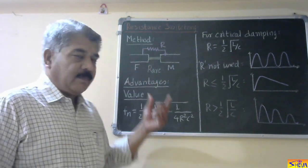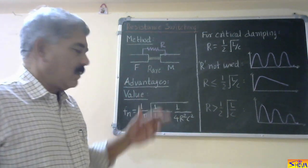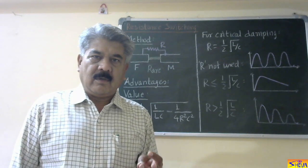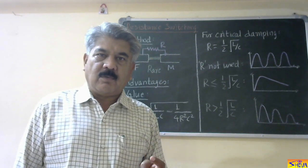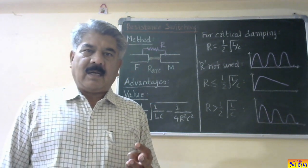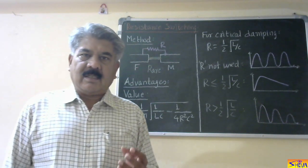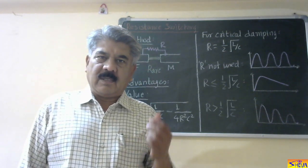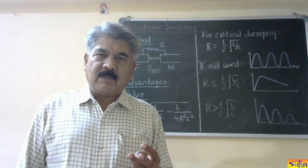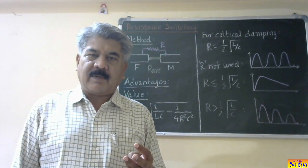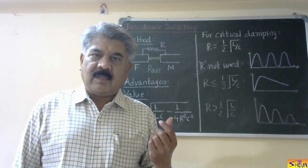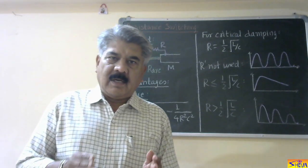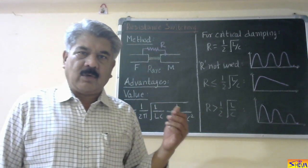This is how we perform resistance switching. The advantages of resistance switching are: first, it controls the overvoltage due to current chopping; second, it reduces the switching overvoltage due to capacitive current breaking; and third, it reduces the rate of rise of restriking voltage, that is RRRV. The severity of switching phenomena depends on two factors — the magnitude of restriking voltage and the rate of rise of restriking voltage. So resistance switching reduces both, thereby improving system performance by controlling the switching overvoltage.